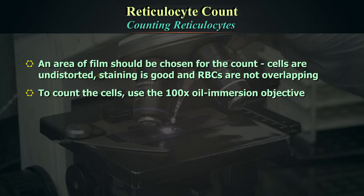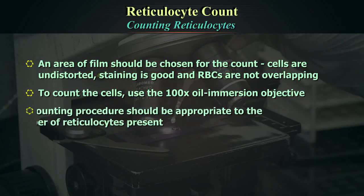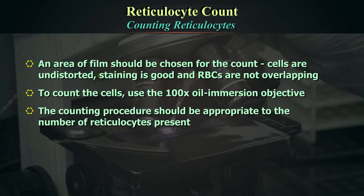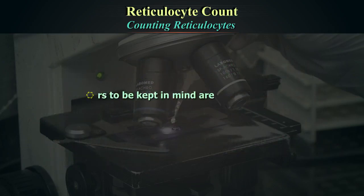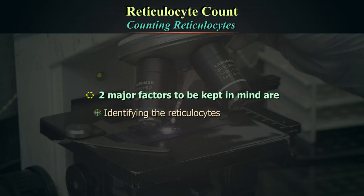Use the 100X oil immersion objective to count cells. The counting procedure should be appropriate to the number of reticulocytes present. Very large numbers of cells have to be surveyed for a reasonably precise count when only small numbers of reticulocytes are present. Two major factors to keep in mind are identifying the reticulocytes and performing the calculations.